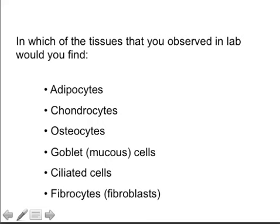Fill-in-the-blank review: Adipocytes are found in adipose tissue and also in the epiglottis. Chondrocytes are found in hyaline cartilage of the trachea. Osteocytes are found in dry ground bone. Goblet cells are found in the trachea. Ciliated cells — pseudostratified ciliated columnar epithelia — are also found in the trachea. Fibroblasts or fibrocytes are found in areolar connective tissue, also known as fascia, which seals muscle fascicles to each other and attaches overlying adipose tissue and skin to the underlying musculature.